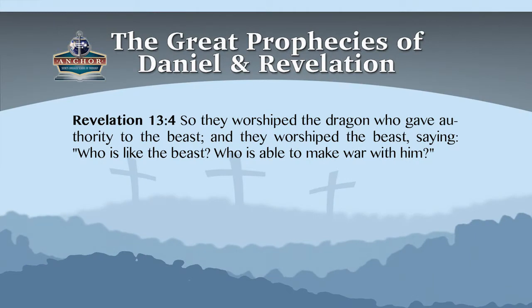Point number two: the issue at the end of time has to do with worship. The last six commandments have to do with horizontal relationships between human beings, while the first four commandments describe the vertical relationship with God. So is the final conflict mainly over the issue of worship? Notice Revelation 13, verse 4: 'So they worshipped the dragon who gave authority to the beast, and they worshipped the beast, saying, Who is like the beast? Who is able to make war with him?'